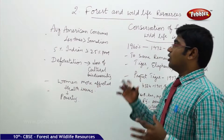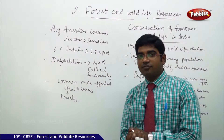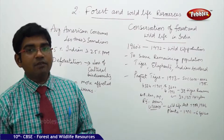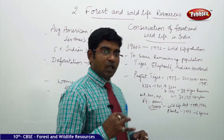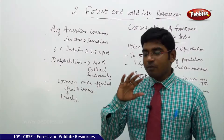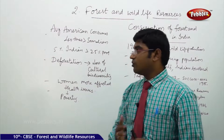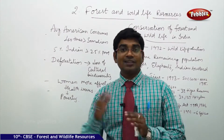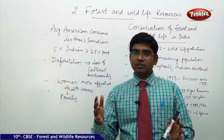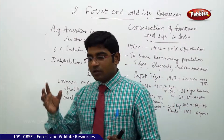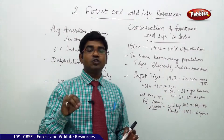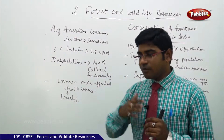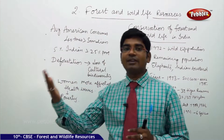Let us now learn the other factors which have affected India's deforestation. Many developed countries consume far more resources compared to common poor people. For example, an average American consumes 40 times more than what an average Somalian person consumes, which means 40 people of Somalia are consuming equal to what 1 person consumes in the US. This means environmental pollution is being caused more by the rich and developed countries.